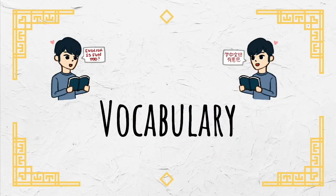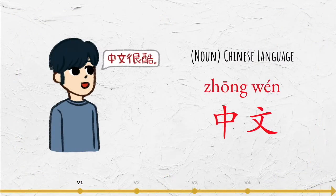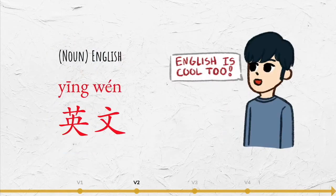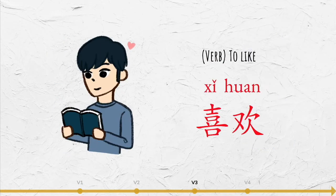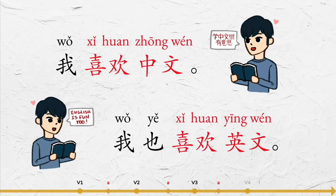Let's first go over some words that you will need for this lesson. 中文 (Chinese), 英文 (English), 喜欢 (to like). For example: 我喜欢中文 (I like Chinese), 我也喜欢英文 (I also like English).